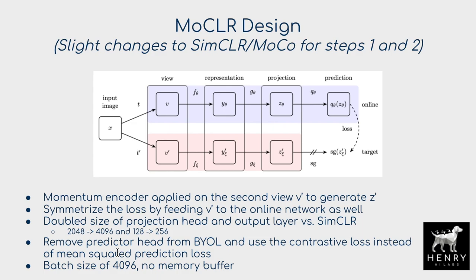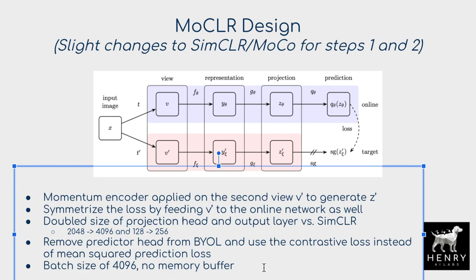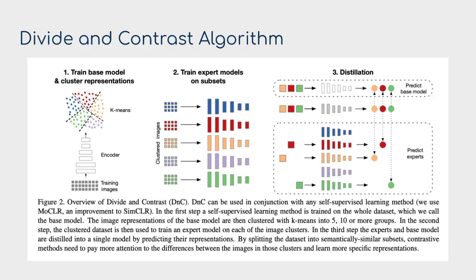MoClear departs from BYOL by using a contrastive loss instead of a mean squared regression loss, and doubles the projection head size to 4096 hidden units with a 256-dimensional representation vector. They also apply symmetry in the loss (both T→T′ and T′→T directions), use a batch size of 4096—notably large for deep learning pipelines—and unlike MoCo, do not use a memory buffer. These are subtle architectural changes not expected to dramatically alter performance but define the stage-one and stage-two pretext learner.